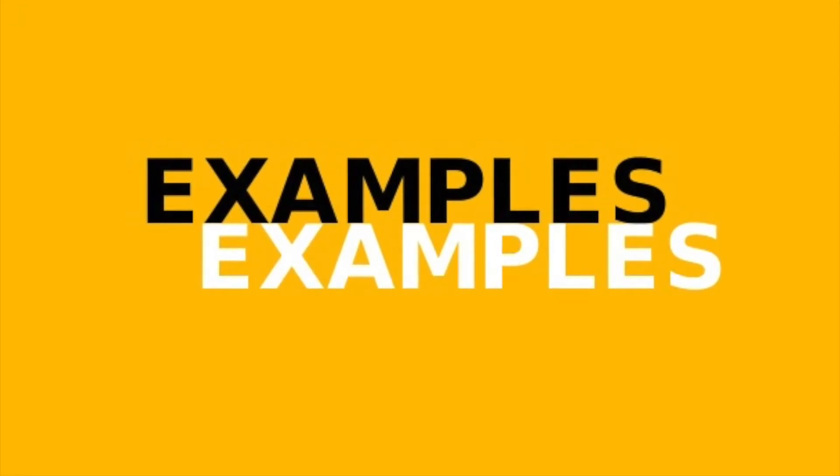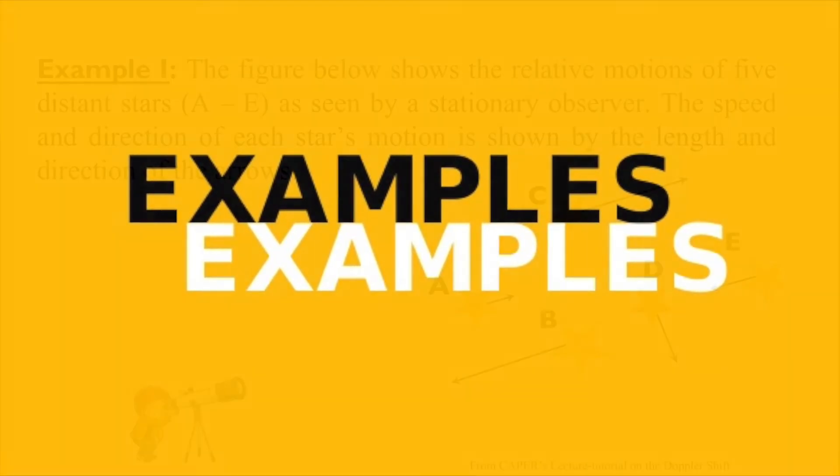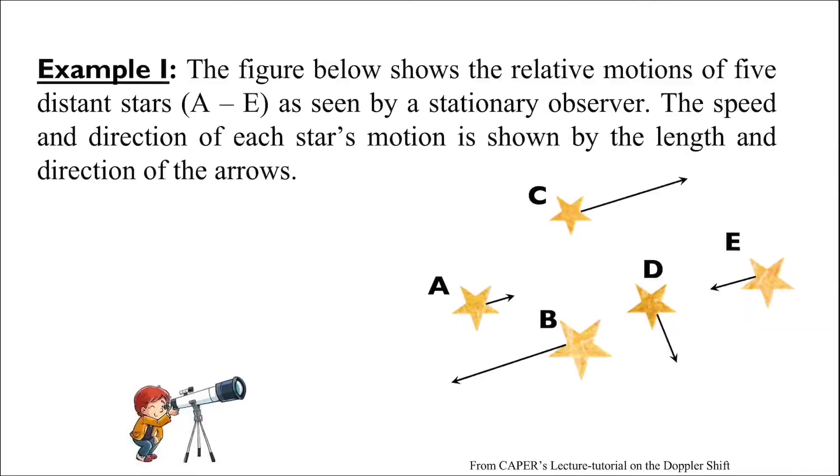So, let's test our understanding with some quick examples. The figure we see below shows the relative motions of five distant stars, labeled A through E, as they are seen by a stationary observer. The speed and direction of each star's motion is shown by the length and direction of the arrows.